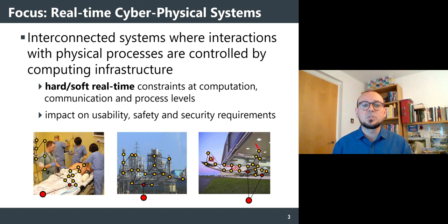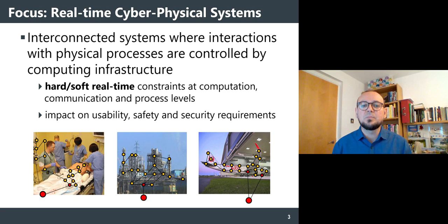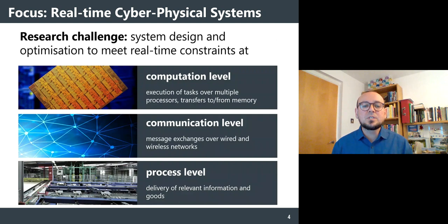Our focus here is on real-time cyber-physical systems, which are interconnected systems where interactions with physical processes are controlled by computing infrastructure. Those interactions have hard or soft real-time constraints at computation, communication, and process levels. Those constraints and the ability of the system to respect them has an impact on the usability, safety, and security requirements of such systems.